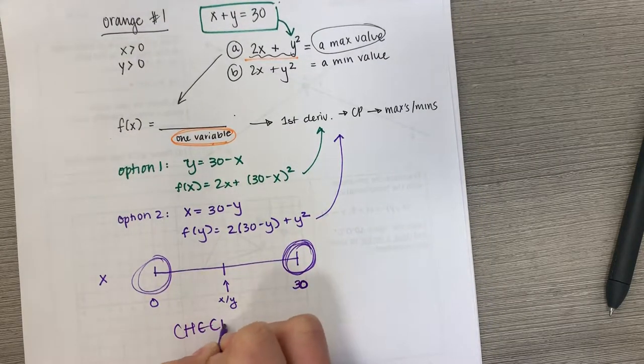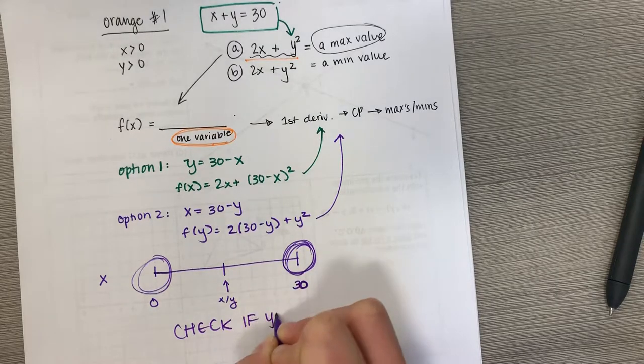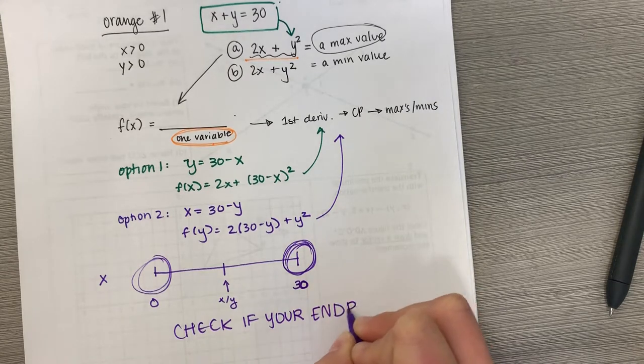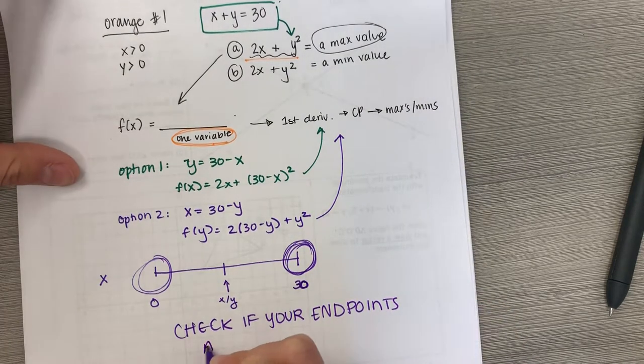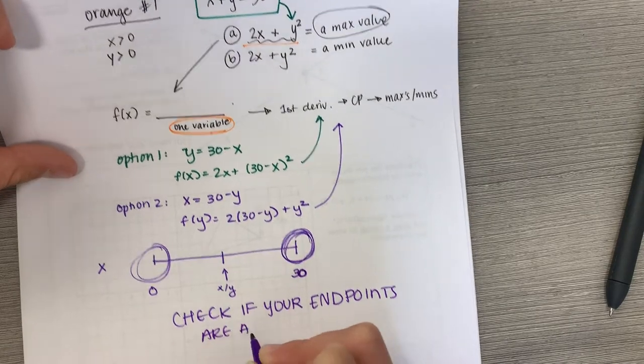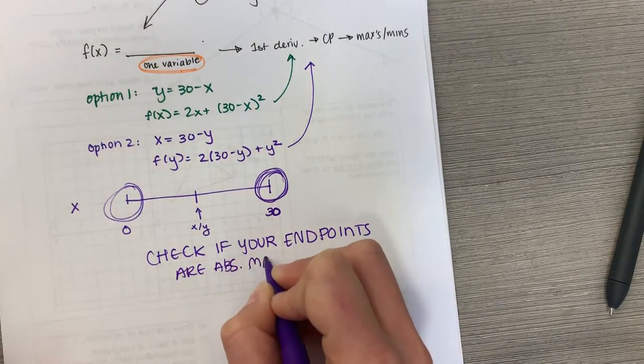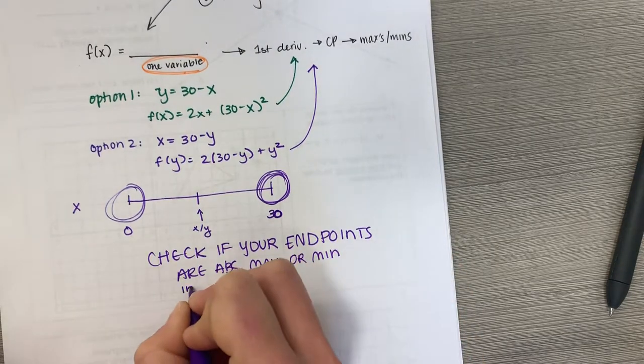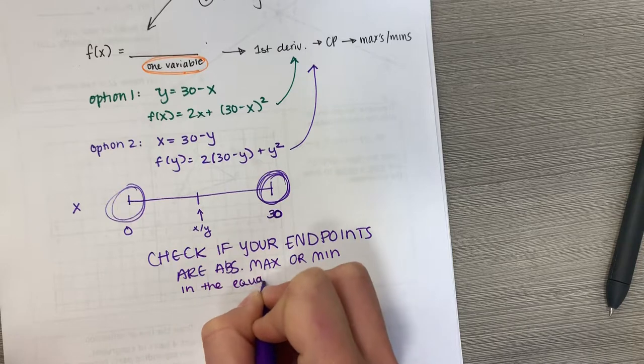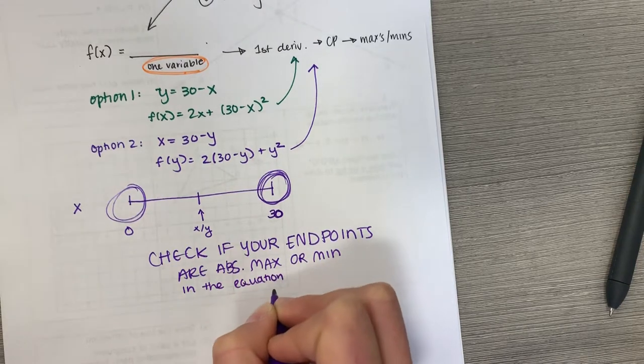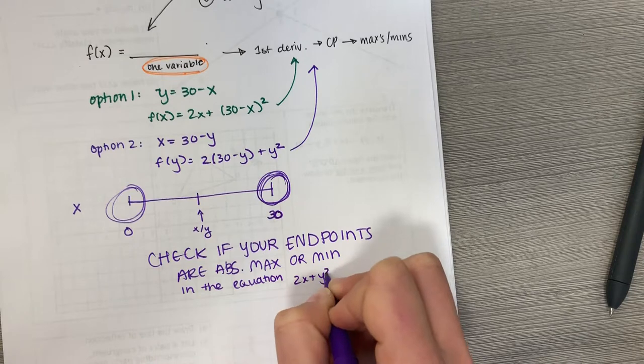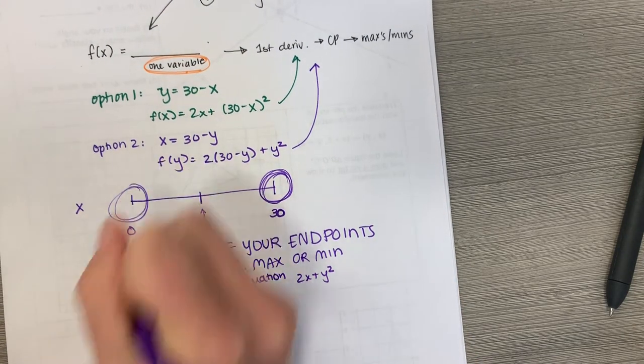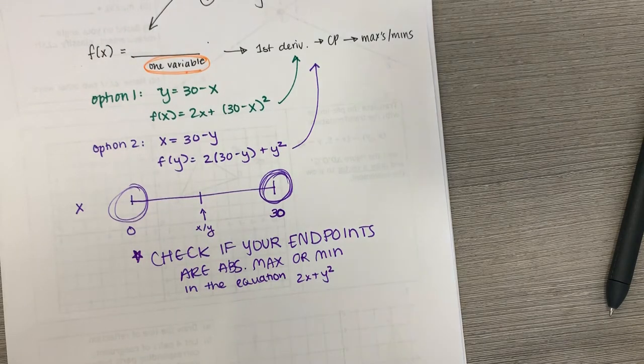Check if your endpoints are absolute max or mins in the equation 2x plus y squared. That's really important to check. Good luck. I'll talk about this next week.